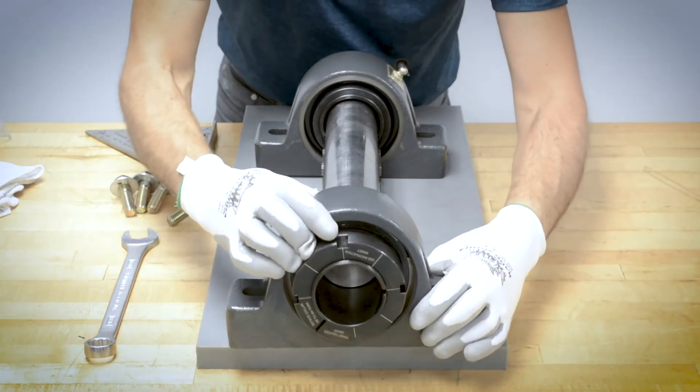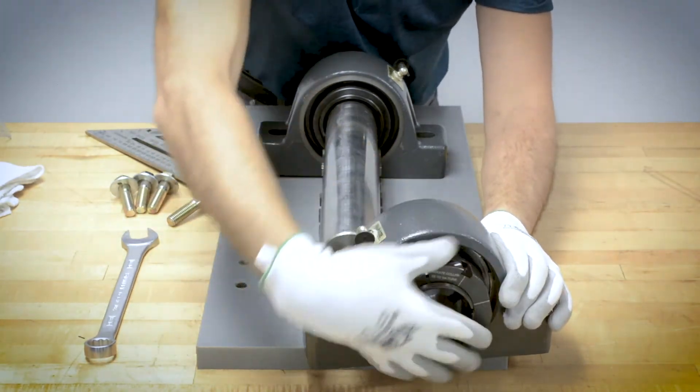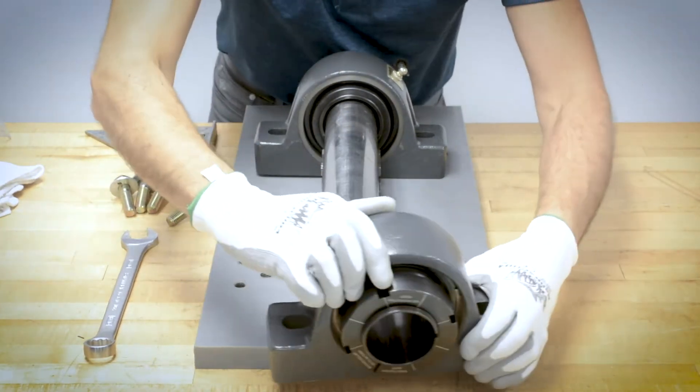If the bearing does not fit loosely, turn the collar nut counterclockwise 1-2 additional turns to open the lock sleeve.